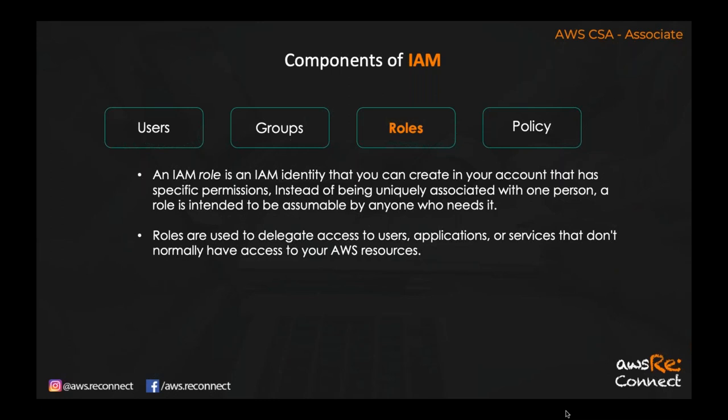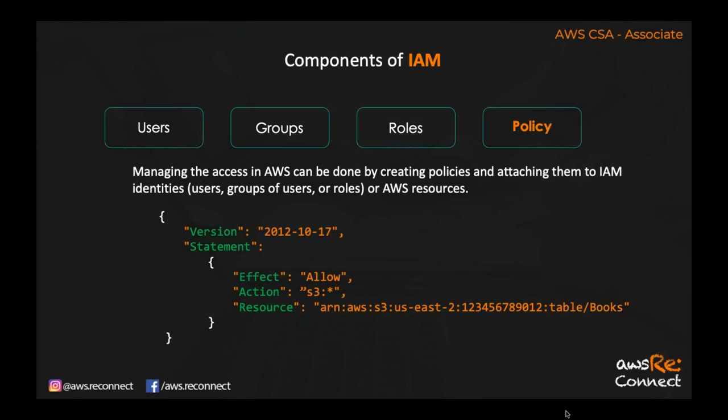Finally, the fourth component is Policy. Whatever permission you are attaching to a user, group, or role is done through a policy. A policy is a document that defines what kind of permissions you are providing. The common format is a JSON document. The first element is 'Version,' which is '2012-10-17' — this is not a date but a version ID assigned by Amazon. The second part is 'Statement,' which defines what kind of permission it is: the Effect is 'Allow,' the Action applies to S3, and the Resource specifies a particular S3 bucket.